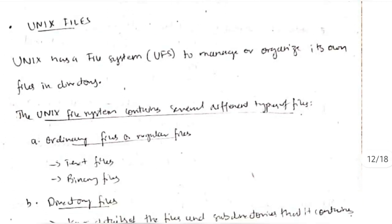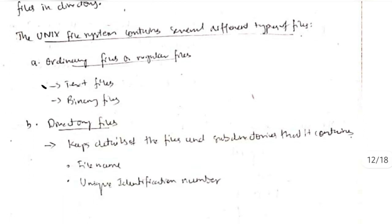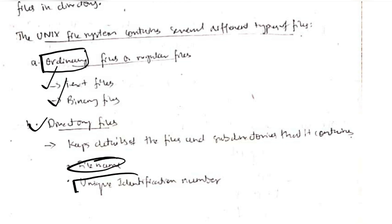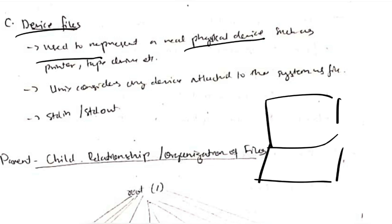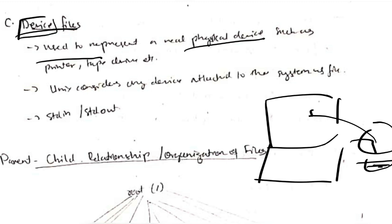Unix files have a file system used to manage or organize its own files in a directory. There are different types of files: text files and binary files, which come under ordinary files. Directory files will have details of the file and the unique identification number. Device files are used to represent a physical device — suppose you connect a keyboard, the keyboard data is stored inside a device file. We can use those files to know the information about the connected device and perform standard input and output operations.